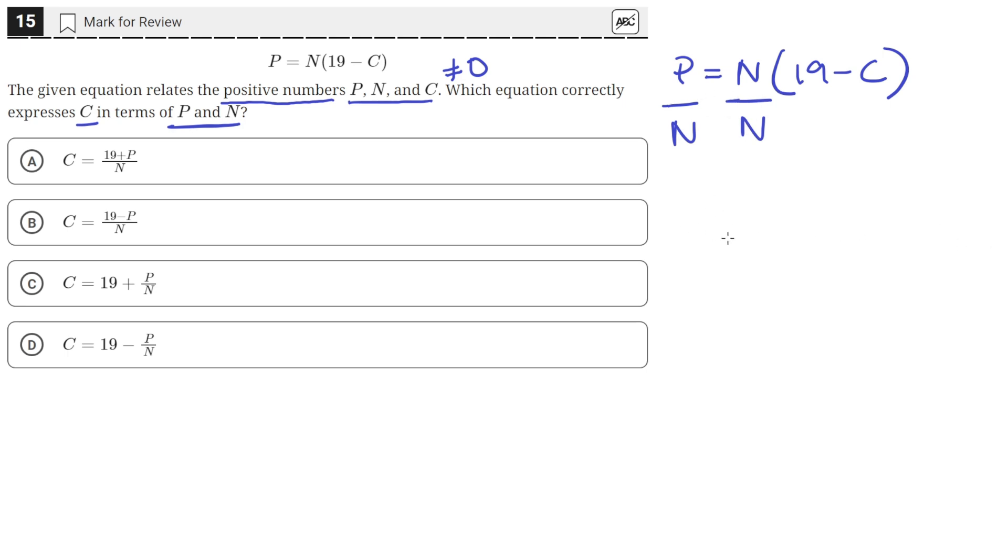So after dividing both sides by N, N over N is just 1. So on the right-hand side, we'll just be left with 19 minus C. And on the left side, we'll be left with P over N.